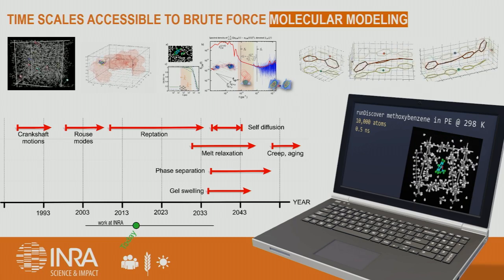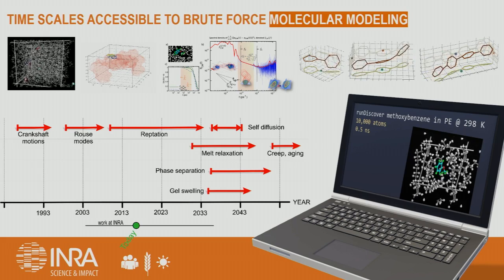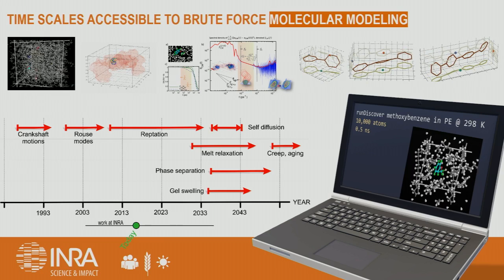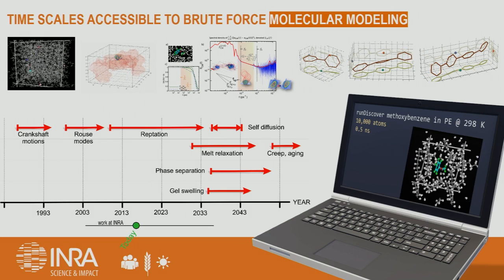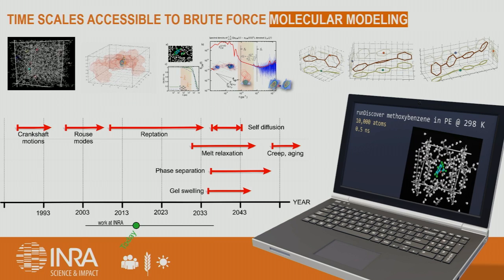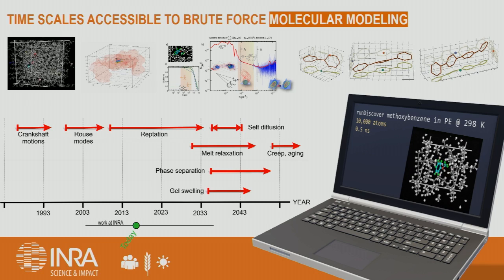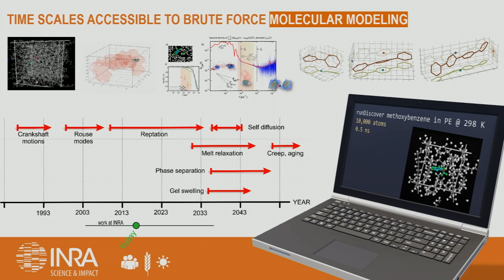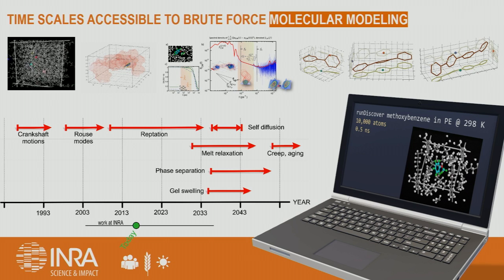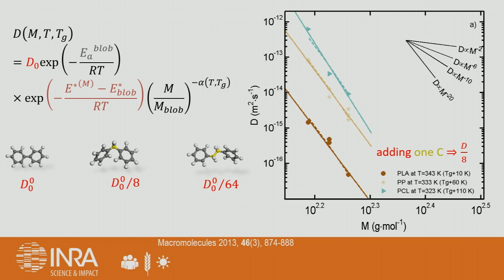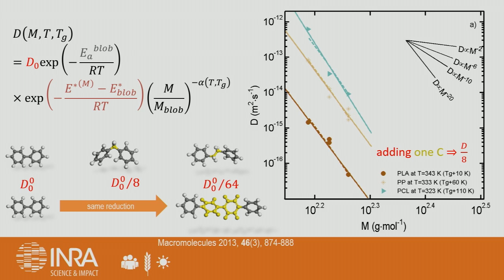Currently, in 2018, we can model crankshaft motion and rotation in polymers. We can predict diffusion coefficients as low as 10⁻¹⁴ square meters per second in just a few days by sketching molecules. We can do it for diffusion, and it works really well. One thing we demonstrated quite recently is that if you add one carbon between two aromatic rings, you can decrease the diffusion coefficient by a factor of eight each time you add just one single carbon. So adding two carbons divides the diffusion coefficient by 64. We can even design molecules that diffuse less, inducing less migration.